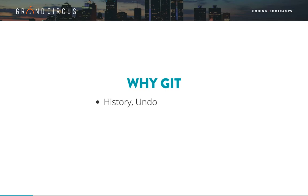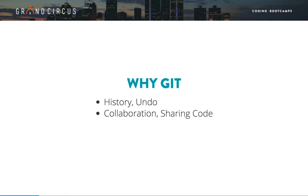Or if we're working on a project for a very long time, we can look back into the history to help remember why we did something. The second reason is to share code with others and to work together on the same project while each using our own computer. Git provides ways to share project files and synchronize each person's changes. For this, we usually need a shared server, like GitHub.com.